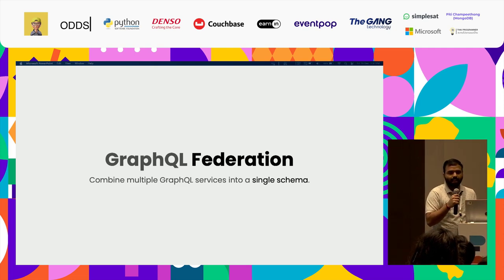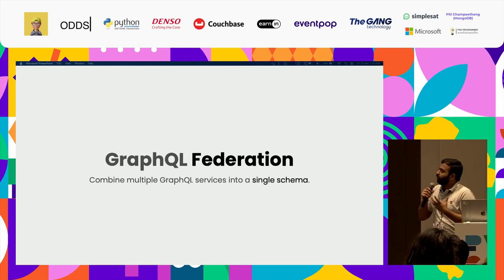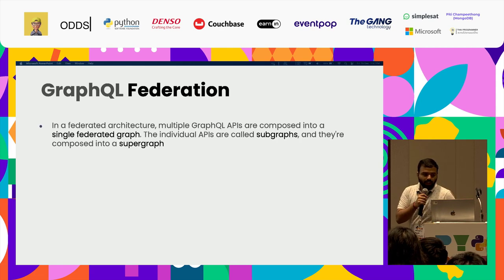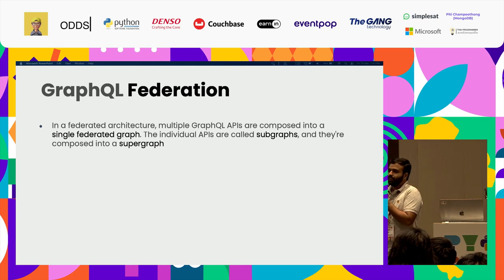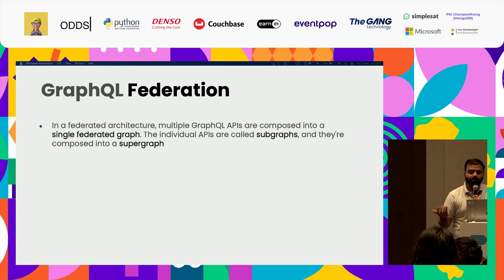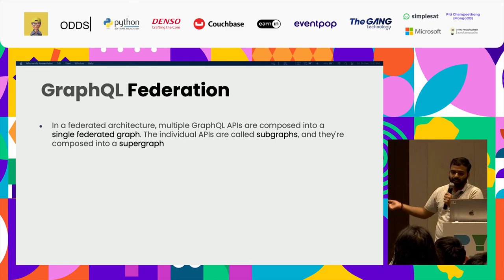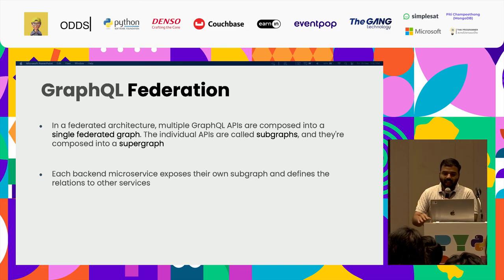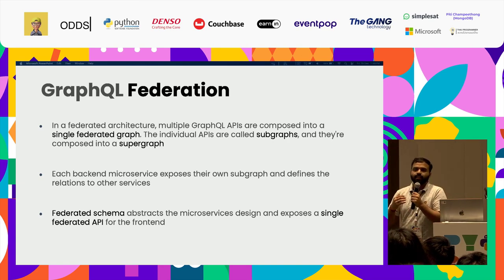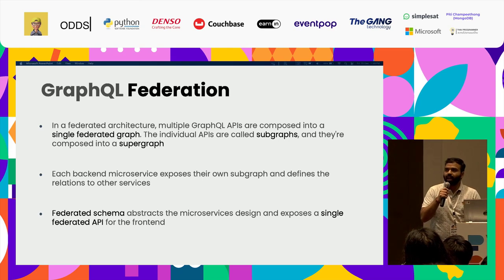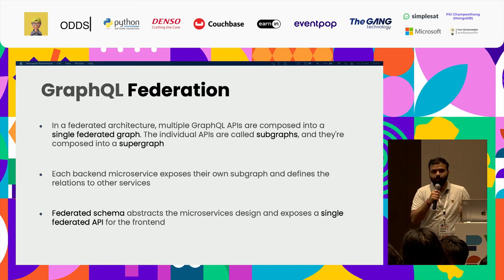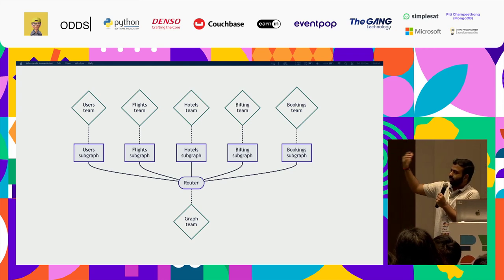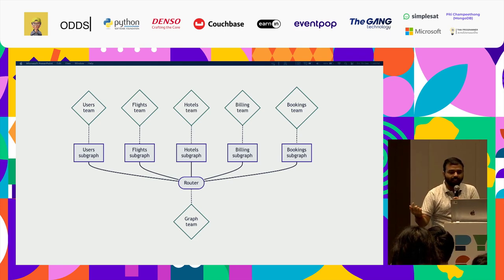Using GraphQL Federation, we can combine multiple services into a single schema. Each individual microservice schema is called a subgraph, and the combined schema is called the supergraph — a single federated graph. Each backend service provides its own subgraph and defines relations to each other. The federated schema abstracts everything from users, so clients and front-end developers see it as the same simple single schema. In the backend, different teams handle different parts. The router or gateway combines everything and provides a single interface.